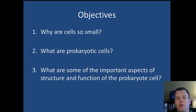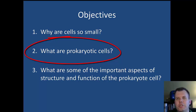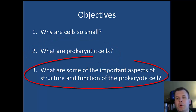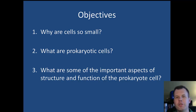Our objectives today are looking at why cells are so small. You may have thought previously, why am I not just one giant cell? Why are we made up of hundreds of millions of tiny little cells? The second thing we're going to look at is what is a prokaryote — cells without a nucleus — and we'll discuss their structure, shape, and a few other things. Finally, we're going to look at some important external and internal structures that prokaryotes have, and why these are important. Hopefully this will give you a better appreciation for prokaryotes beyond just thinking of bacteria that cause illness or make things stinky or rotten.